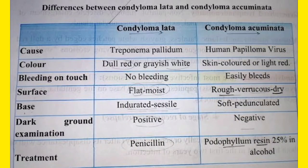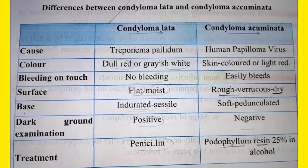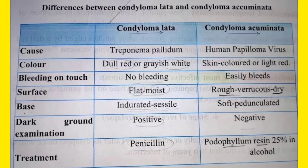Condyloma accumulata has soft, pedunculated lesions — the cauliflower has a peduncle and is soft in nature. Condyloma lata, however, has flat-top lesions that are hard, indurated, and sessile — they have no peduncle. Remember: accumulata is soft and pedunculated; lata is hard, indurated, and sessile.